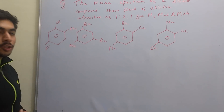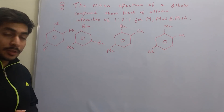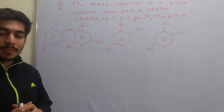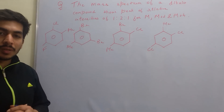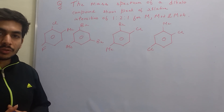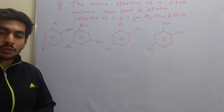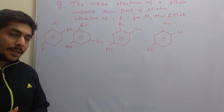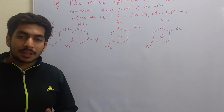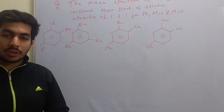This is another question from the topic of mass spectrometry. You might have seen a pattern in the questions that have been asked in mass spectrometry — it's basically based on the natural abundance or the isotopic effect, and most of the questions are based on the molecular ion peak. So it's sometimes very important to identify the kind of pattern that has been going on.